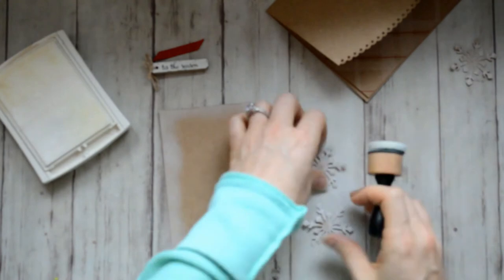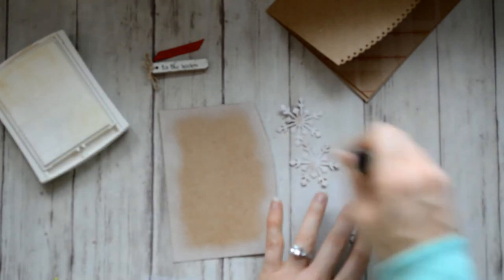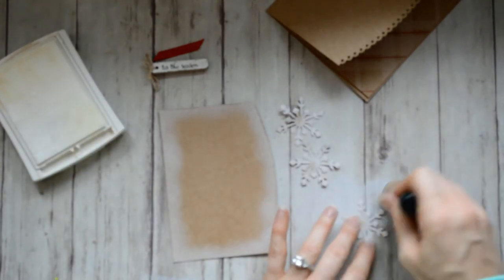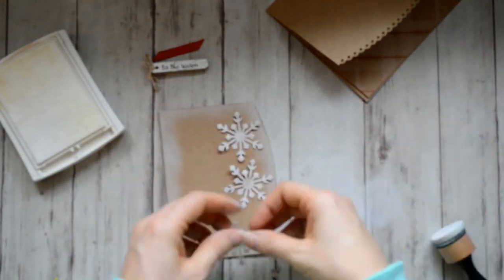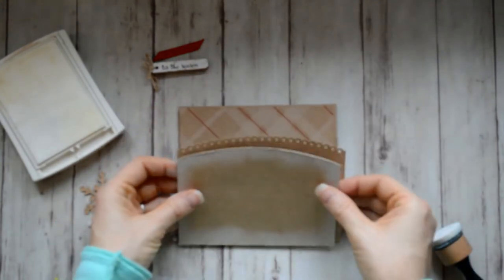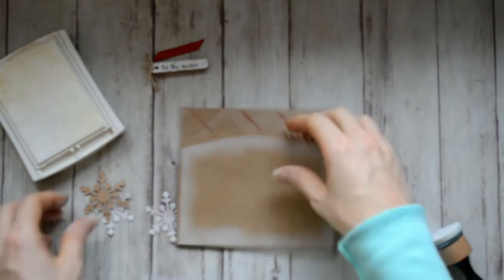And so it started getting dark outside and also I have a two and a half year old. So I assembled this card off camera and I just used some of my Tombow multi-purpose glue to adhere everything down and to finish the card.